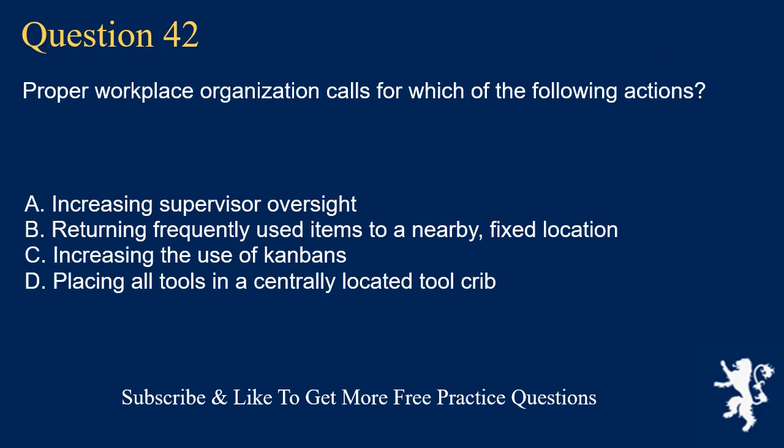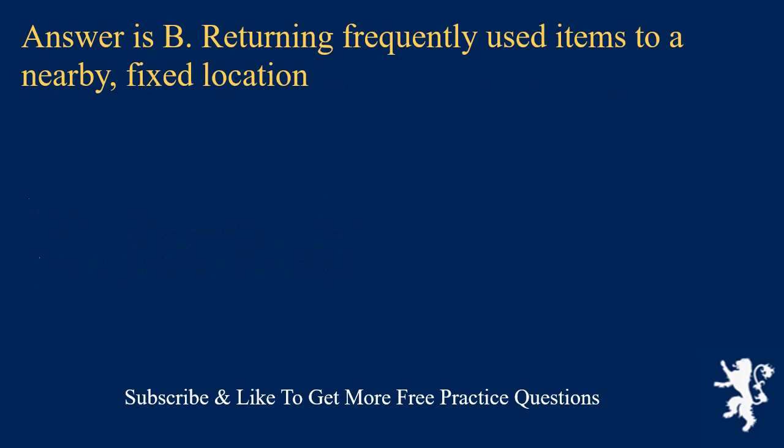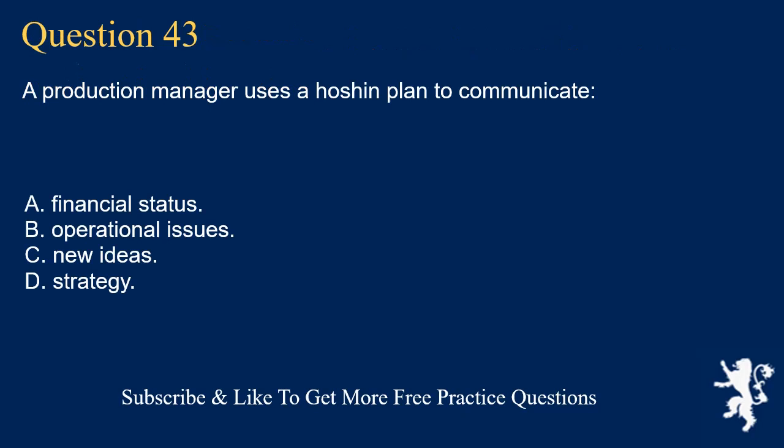Question 42. Proper workplace organization calls for which of the following actions? A. Increasing supervisor oversight. B. Returning frequently used items to a nearby, fixed location. C. Increasing the use of kanbans. D. Placing all tools in a centrally located tool crib. Answer is B. Returning frequently used items to a nearby, fixed location.